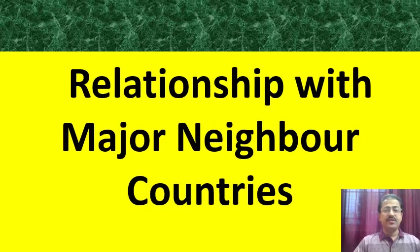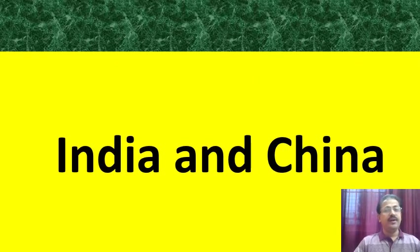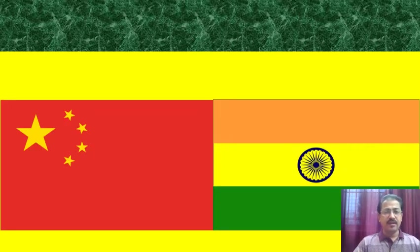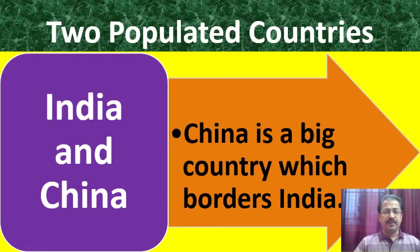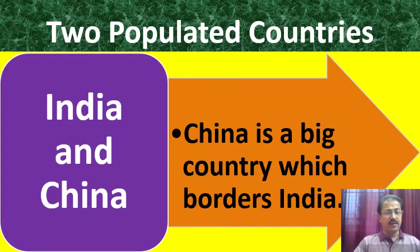Now let us see the relationship with major neighbouring countries — first, India and China. India and China's relationship dates back to Mesopotamian and Indus Valley civilisation. Both had very good ancient trade relationships. India and China are two highly populated countries. China shares its border with India. India likes to have a good relationship with China, but China has not always exhibited the same attitude.